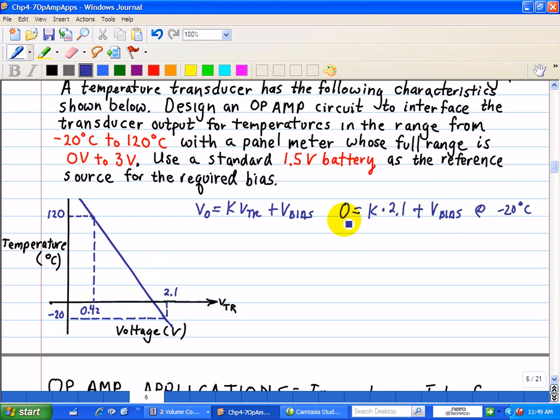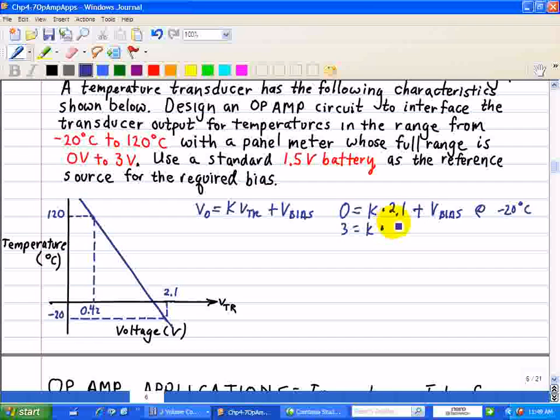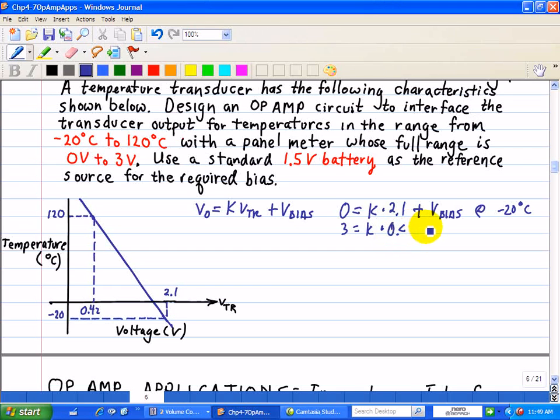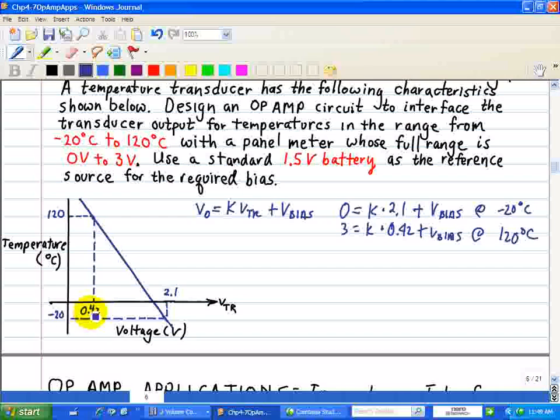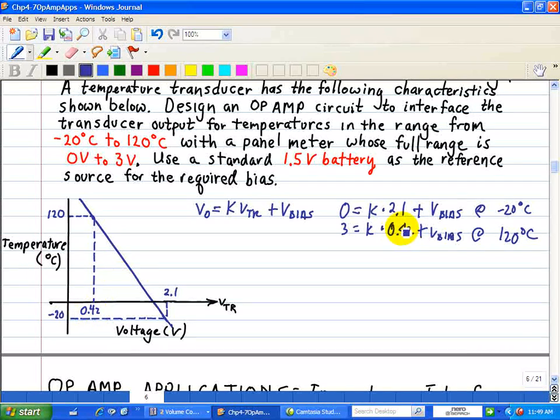Our other equation is 3 equal to K times 0.42 plus V bias at 120 degrees centigrade. So 120 degrees corresponding to it is 0.42 volts. Multiply some application and do some bias. Now doing the algebra,